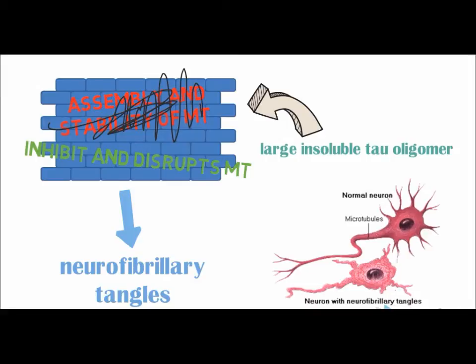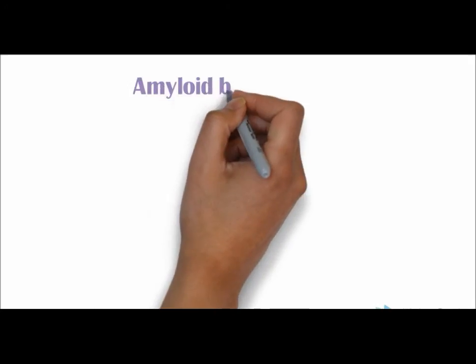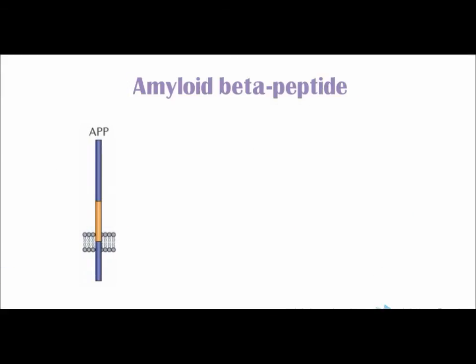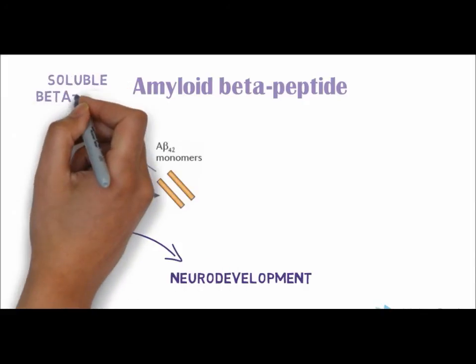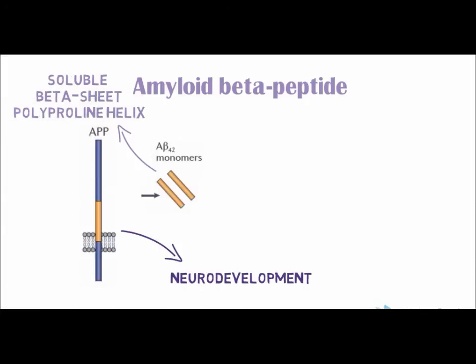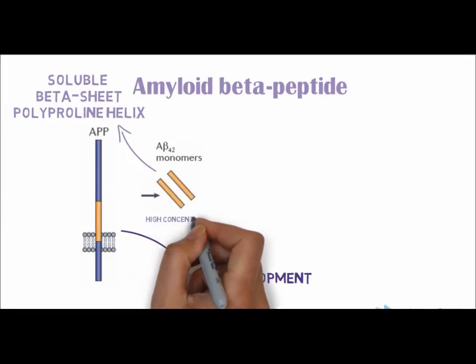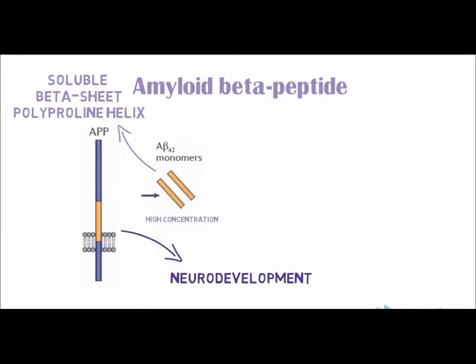Amyloid beta peptide is a short peptide that is an abnormal proteolytic byproduct of amyloid precursor protein, APP, whose function is thought to be involved in neurodevelopment. Amyloid beta monomers are soluble and contain short regions of beta sheet and polyproline helix secondary structures in solution, and alpha helical structures in membranes. At high concentration, the amyloid beta monomers undergo conformational change to form toxic oligomers, which have a beta sheet-rich tertiary structure that aggregates to form amyloid fibrils.